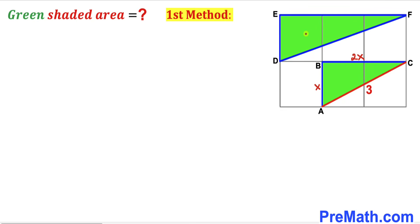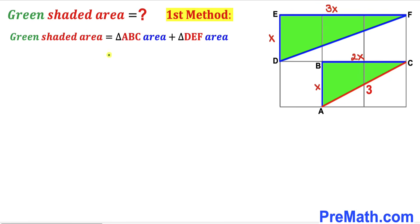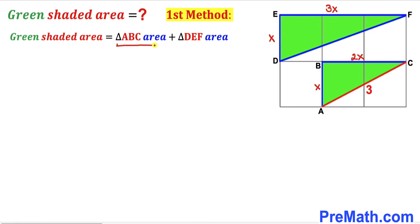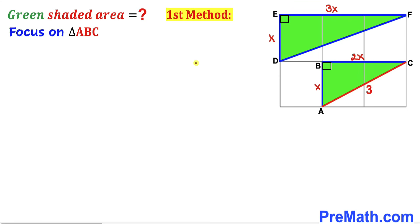Likewise, for the other right triangle DEF, if this side is x, then this side has got to be 3 times x. Now let's make an observation: the whole green shaded area is going to be equal to the area of triangle ABC plus the area of triangle DEF. Our task is to calculate the area of triangle ABC and the area of triangle DEF as well.